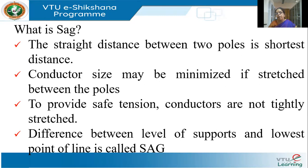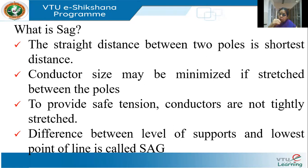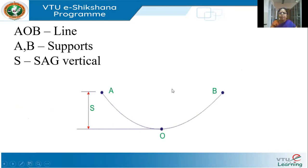I gave you in the previous session the analogy of a clothes line. When you stretch a clothes line between two hooks, over a period it will come down. We all have that experience at home — after one or two years we pull it and make it straight again because it would have sagged by its own weight. So here, A and B are two supports — the tips of two poles, both at the same height — and AOB is the conductor.